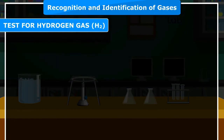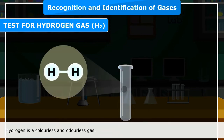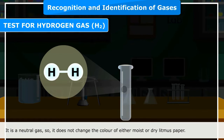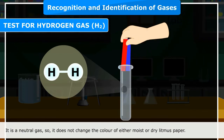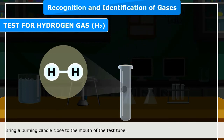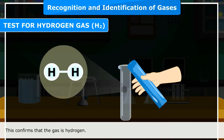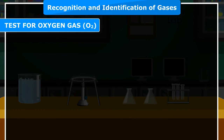Test for hydrogen gas (H₂): Hydrogen is a colorless and odorless gas. It is a neutral gas, so it does not change the color of either moist or dry litmus paper. Confirmatory test: Bring a burning candle close to the mouth of the test tube. The gas burns with a pop sound. This confirms that the gas is hydrogen.